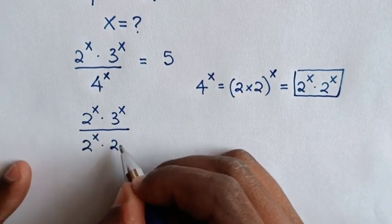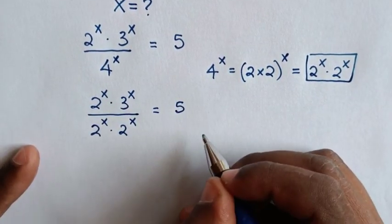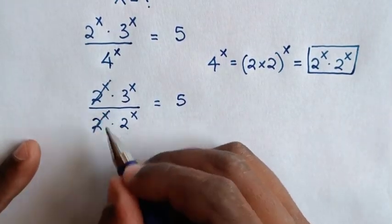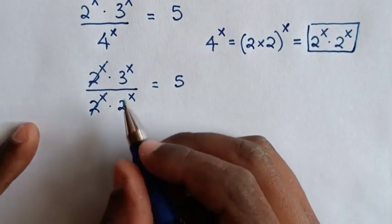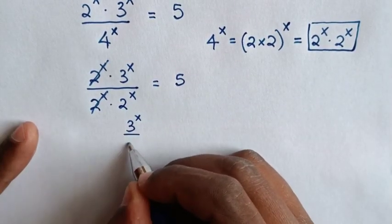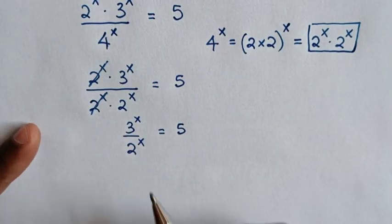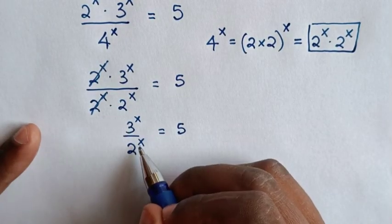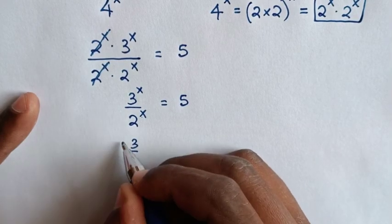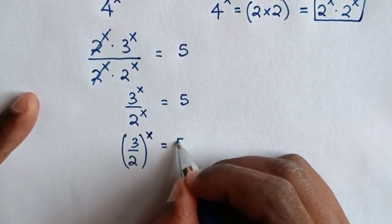So our equation becomes 2 power x times 3 power x over 2 power x times 2 power x is equal to 5. Then 2 power x will cancel with 2 power x, giving us 3 power x over 2 power x is equal to 5. Since we have a common power of x, this becomes (3 over 2) bracket power x is equal to 5.